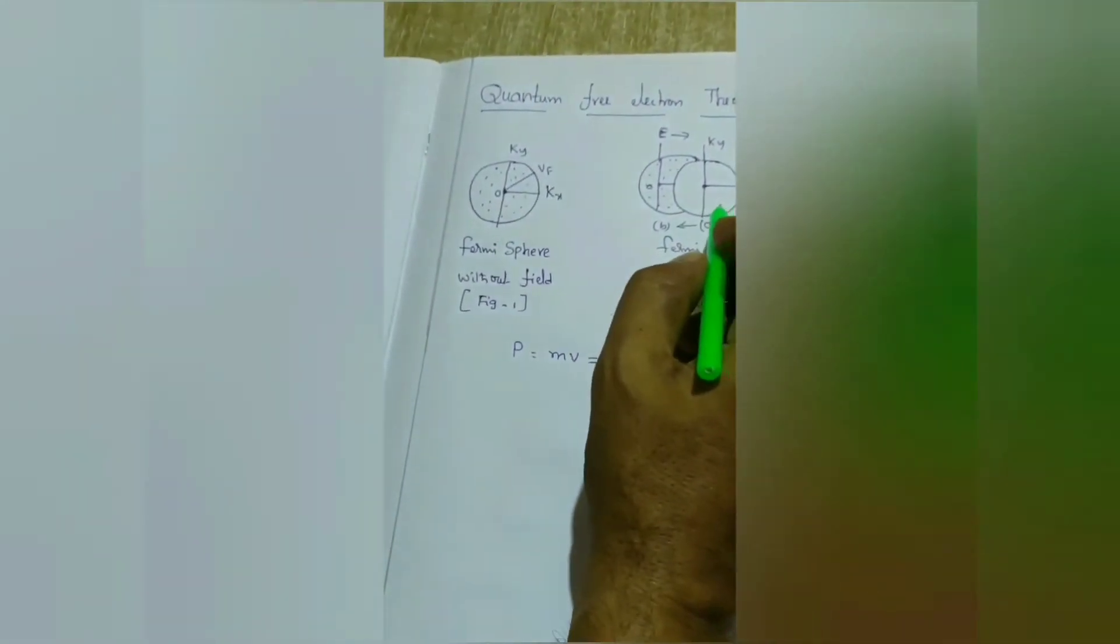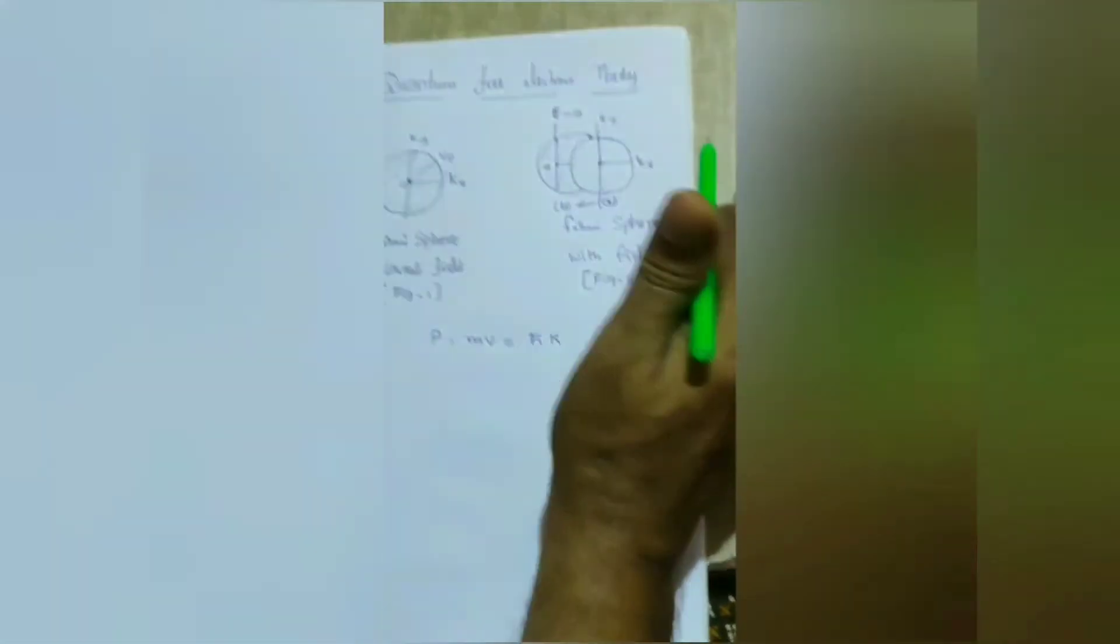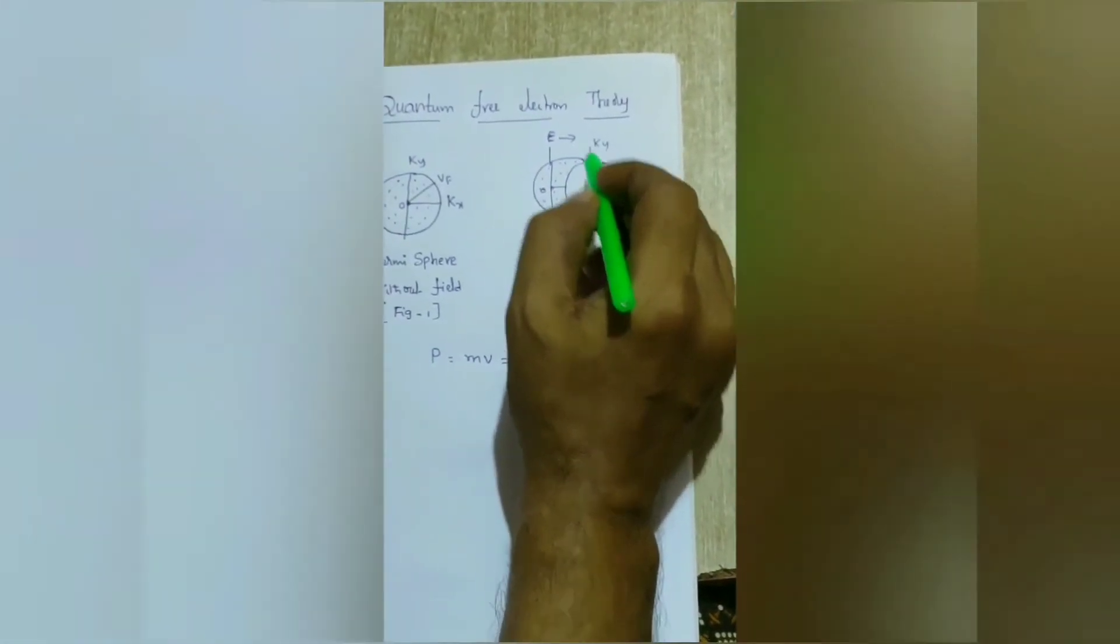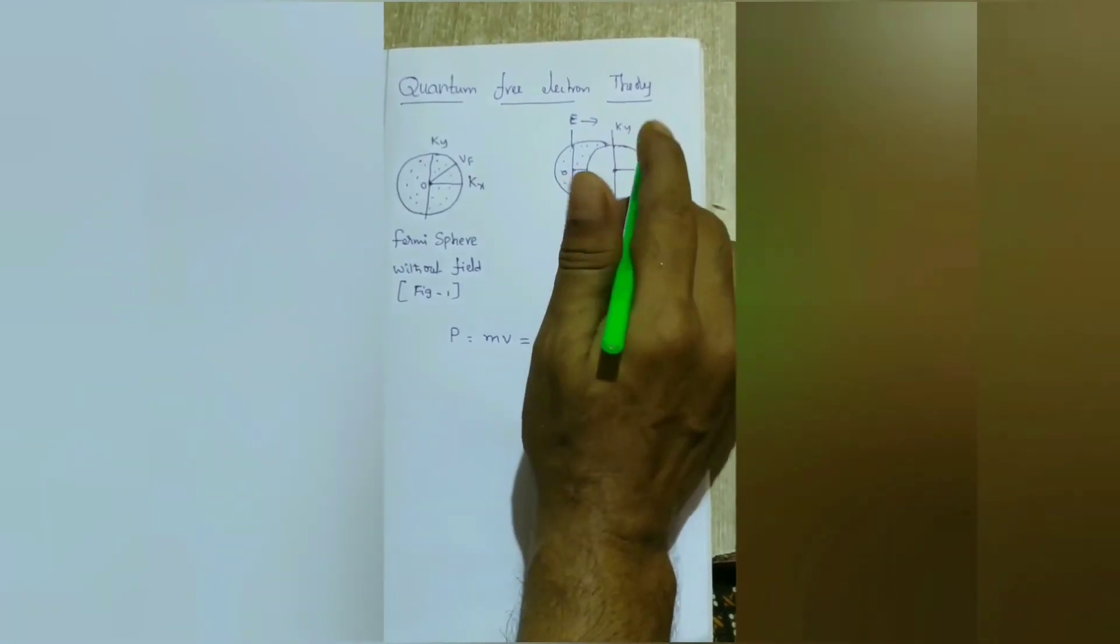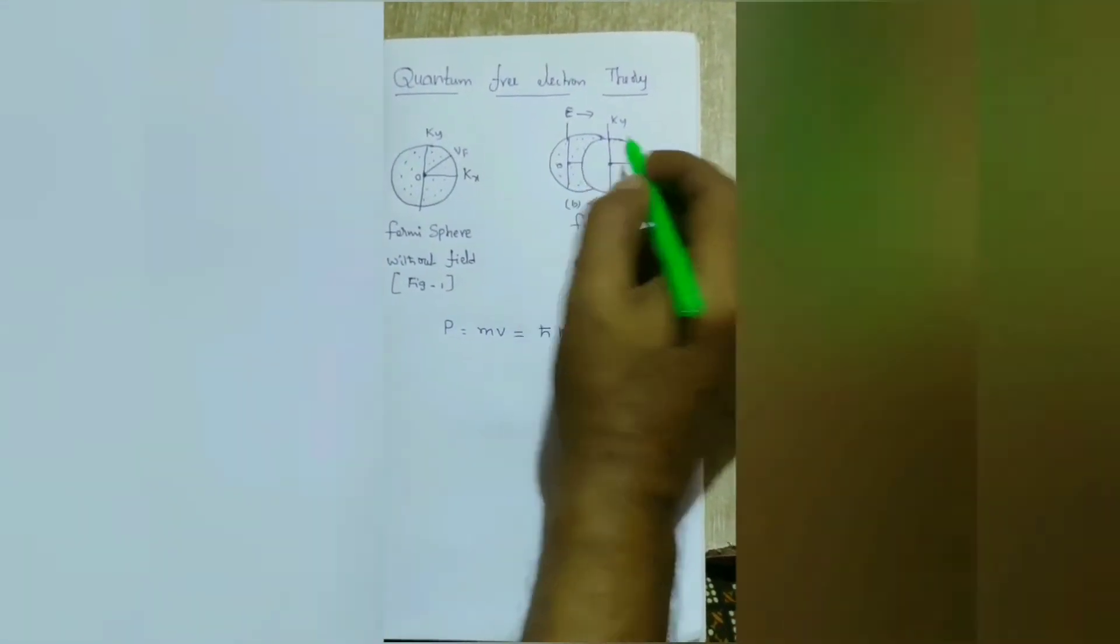Now going to second diagram, this is represented as a shifted sphere. When an external field E is applied to the Fermi sphere along x direction, the total Fermi sphere is shifted from A to B. This is opposite to the field direction.